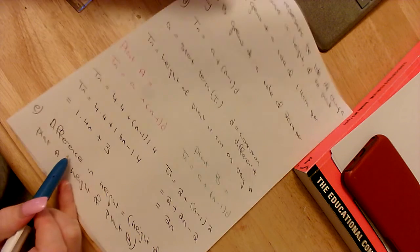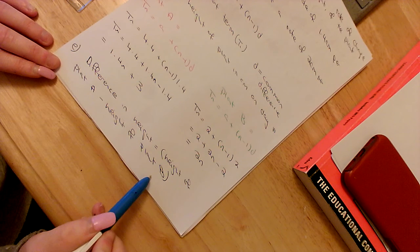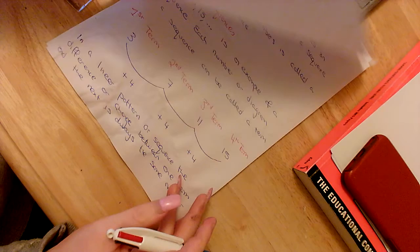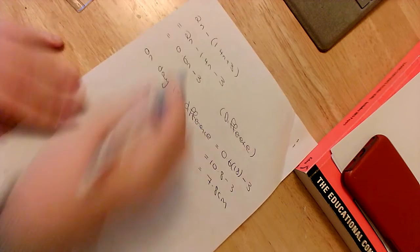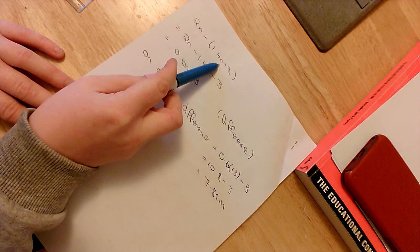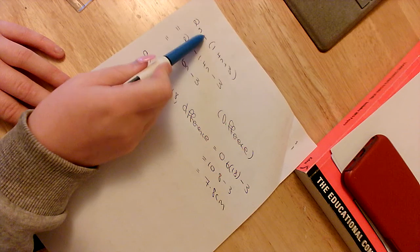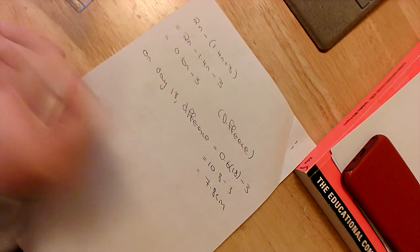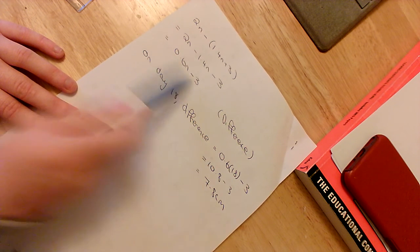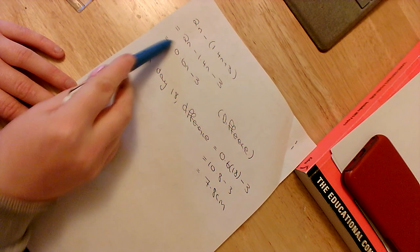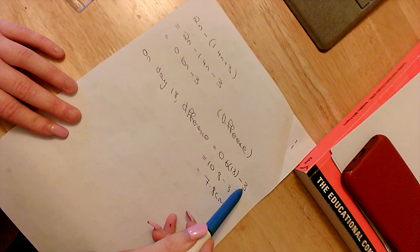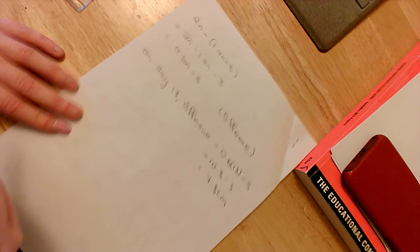Part E asks for a formula for the difference between the two plant heights. Since Plant B is taller, I take Plant B minus Plant A: 2n − (1.4n + 3) = 2n − 1.4n − 3 = 0.6n − 3. That's the general difference formula. On Day 18, substituting n = 18: 0.6(18) − 3 = 10.8 − 3 = 7.8 centimetres.